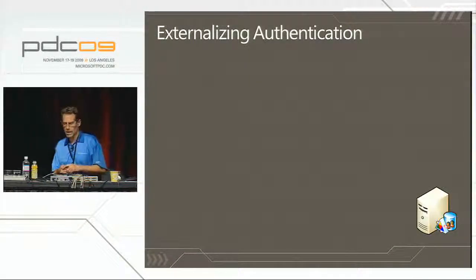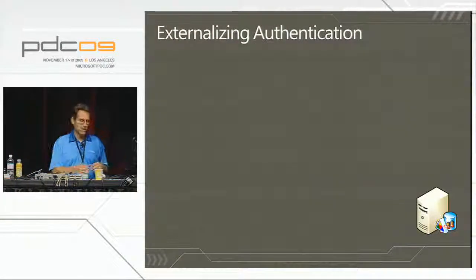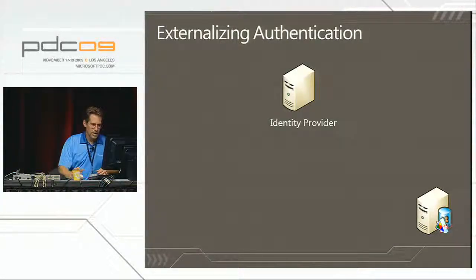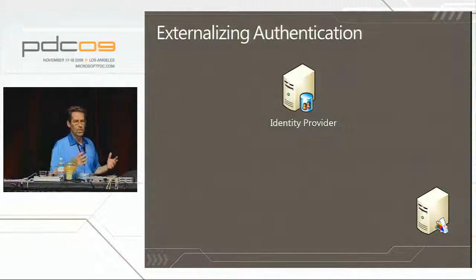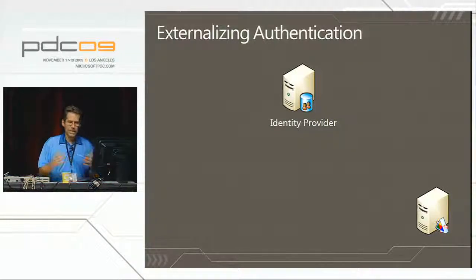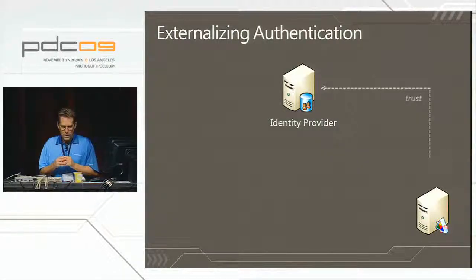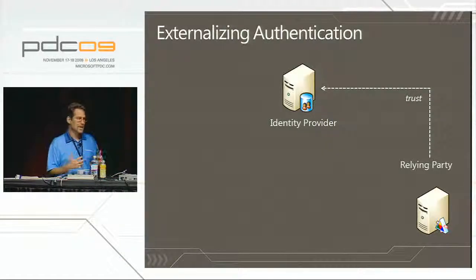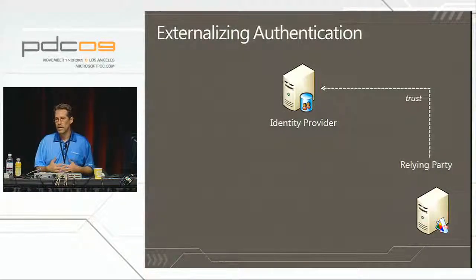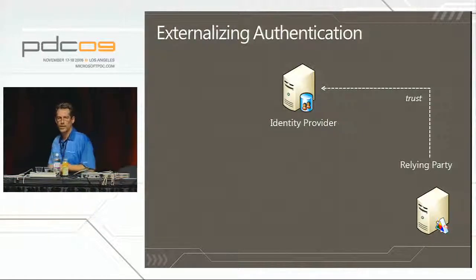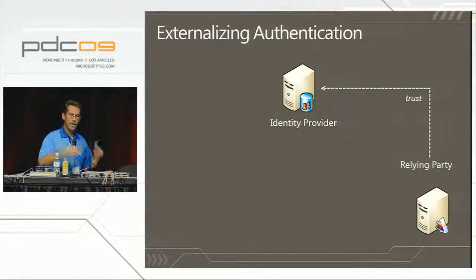We start with an application that has an account store on it. We add an identity provider node and steal the account store away from the application. The app can no longer authenticate anybody on its own. Instead, we establish a trust to the identity provider — a cryptographic arrangement that says: if I get a blob of data about a user signed with this key, I'll believe it and make claims from it.